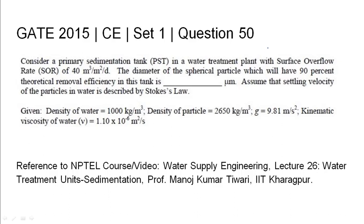GATE 2015 Civil Engineering Set 1 Question 50: Consider a primary sedimentation tank in a water treatment plant with surface overflow rate of 40 meters per day. Find the diameter in micrometers of the spherical particle which will have 90% theoretical removal efficiency in this tank. Assume that settling velocity of particles in water is described by Stokes law. The relevant NPTEL reference is listed.